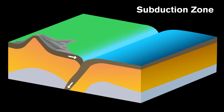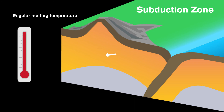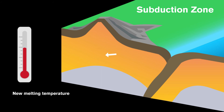The denser plate typically is full of volatiles. These are chemical compounds such as water or carbon dioxide. The addition of volatiles into the mantle causes the melting temperature of the mantle to decrease. This decrease in melting temperature causes the mantle to melt, forming magma.